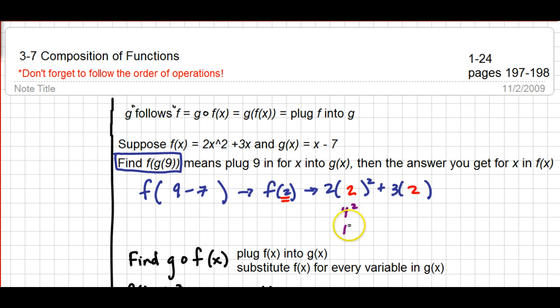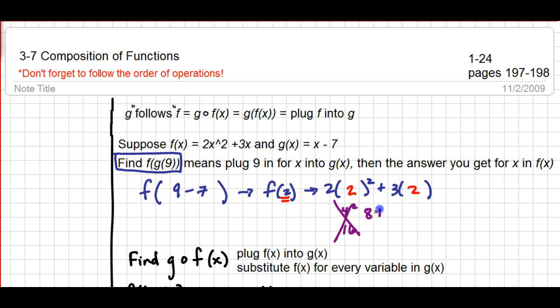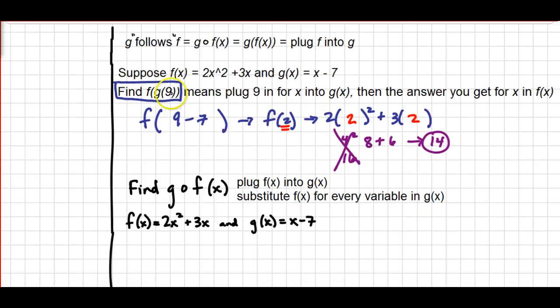You want to do 2 squared, which is 4, 4 times 2, which is 8. So we're gonna get 8 here, and then 3 times 2 is 6, so our answer then is 14. So that's one type of problem that you're gonna see. That is where you have to plug a number into the functions. Your answer will be a number.